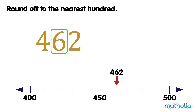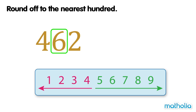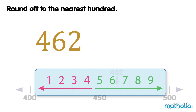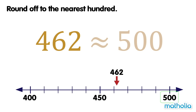The digit in the tens place is 6. Digits that are 5 or more are rounded up. So 462 is rounded up to 500. To the nearest hundred, 462 is approximately equal to 500.